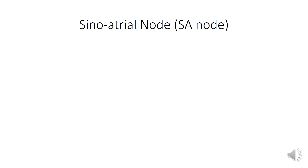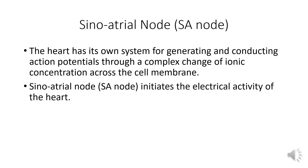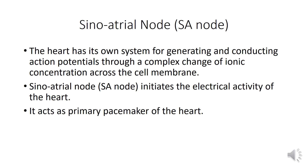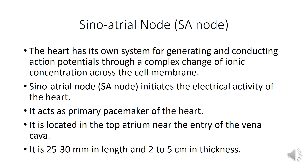Let us discuss about the sinoatrial node, also called the SA node. The heart has its own system for generating and conducting action potentials through a complex change of ionic concentration across the cell membrane. The sinoatrial node initiates the electrical activity of the heart and acts as the primary pacemaker of the heart. It is located in the top atrium near the entry of the vena cava. It is 25 to 30 millimeters in length and 2 to 5 centimeters in thickness.